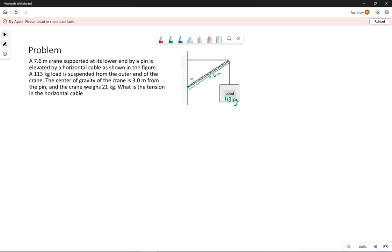It's elevated by the horizontal cable. We have our load, 113 kilograms suspended from the outer edge. The center of gravity of the crane is representing center of mass. Center of mass and center of gravity are the same thing when we're dealing with regular-sized objects, even a crane. They're telling us the center of gravity is 3 meters, so come up here 3 meters from the pin.